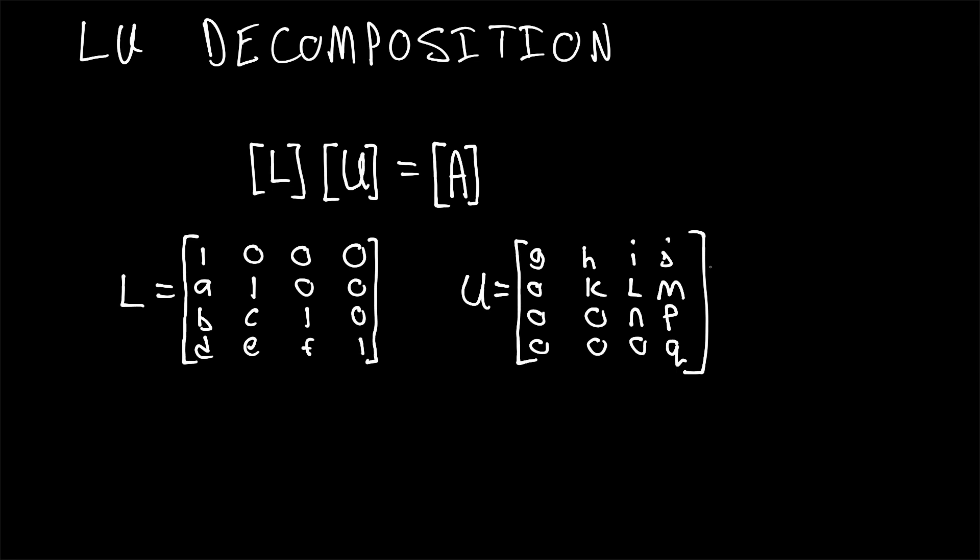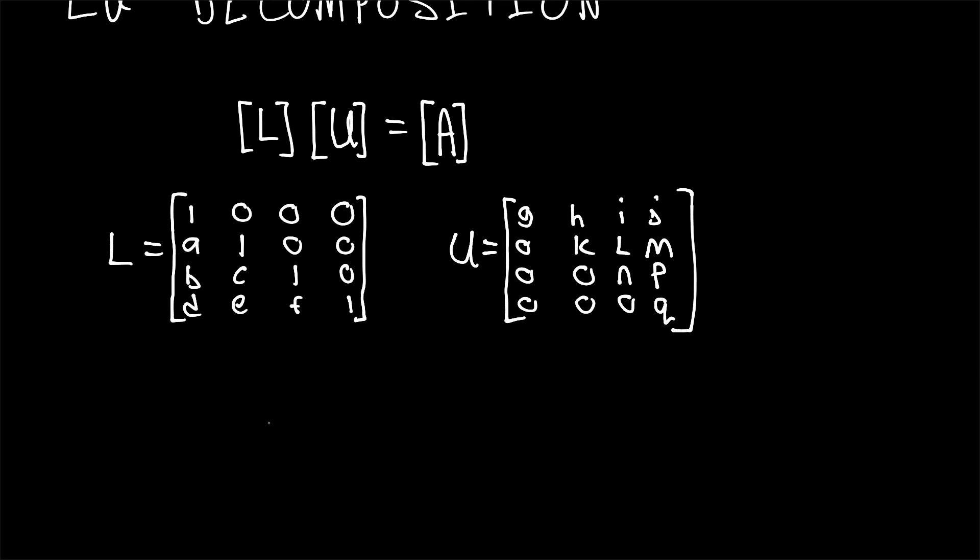And in these two matrices, we have elements A, B, C, D, E, F, G, H, I, J, K, L, M, N, P, and Q. These are all currently unknowns, which we will be solving through this problem, basically going element by element through these matrices. And we're going to solve this for a given matrix, matrix A equals...